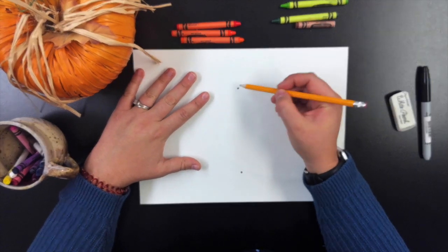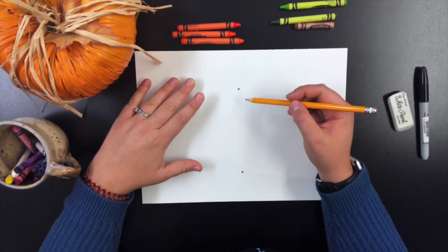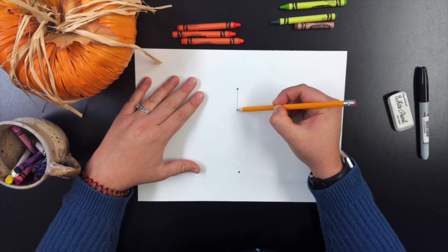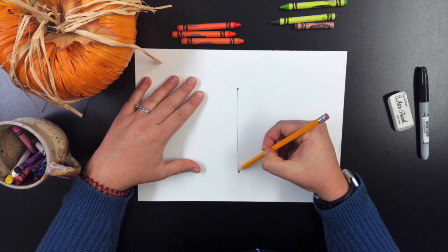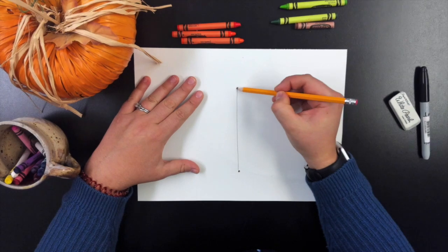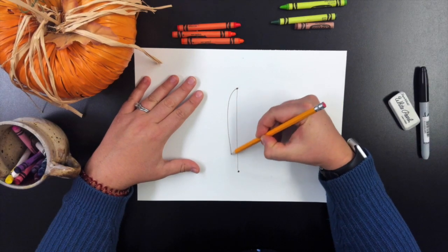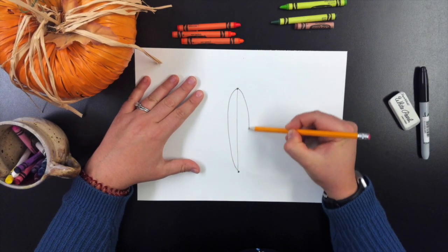Once we have the two dots, we are going to take our pencil and draw a line from the top to the bottom. This line should be fairly straight. If you remember what I was talking about, the spaghetti, it should be straight.